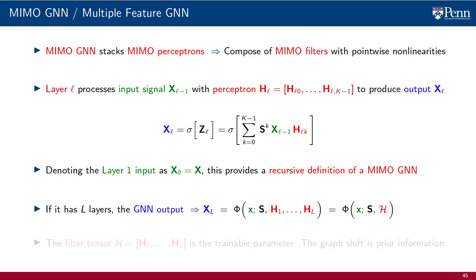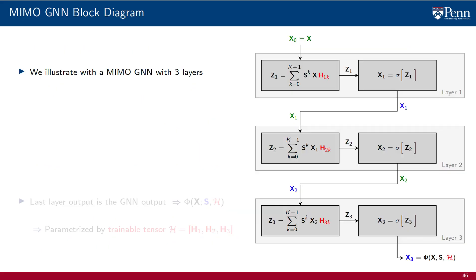We define the filter tensor calligraphic H to write the MIMO GNN with more compact notation. The filter tensor H is the trainable parameter of the GNN. The graph shift is prior information. This description of a MIMO GNN is more or less the same description we gave of GNNs and fully connected neural networks. The only change is the use of MIMO graph filters.